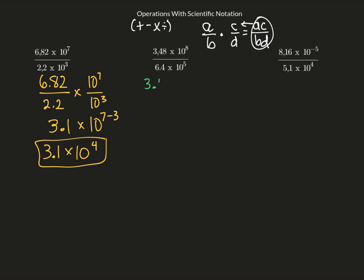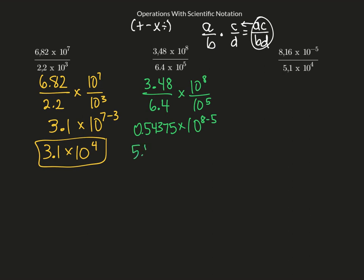I'm going to break this up into 3.48 divided by 6.4, times 10 to the 8th divided by 10 to the 5th. I subtract the exponents: 10 to the 8 minus 5. Dividing on the calculator gives 0.54375. My mantissa needs to be changed, so that becomes 5.4375 times 10 to the 1st, times 10 to the 3rd — because that's 8 minus 5. Adding those exponents gives a final answer of 5.4375 times 10 to the 4th.